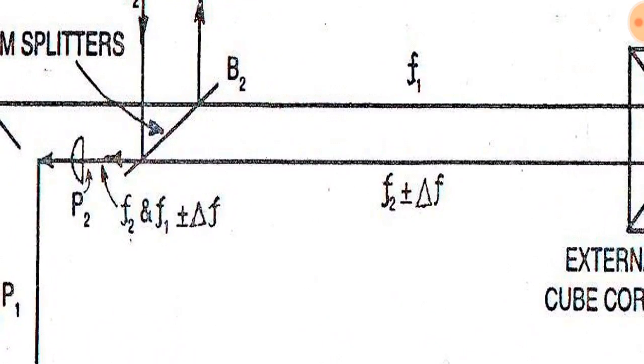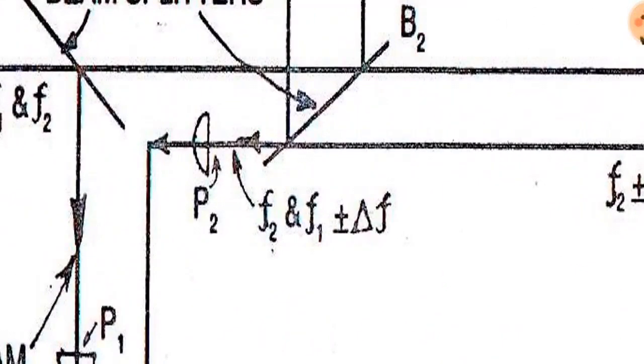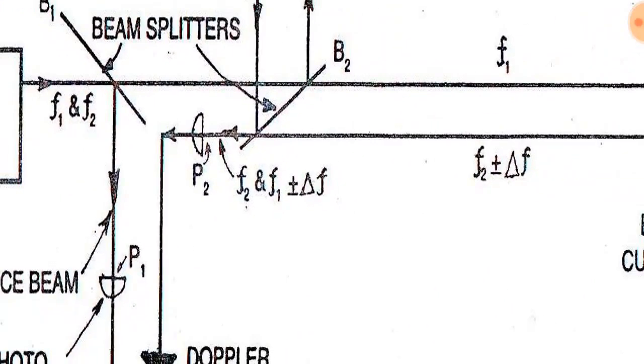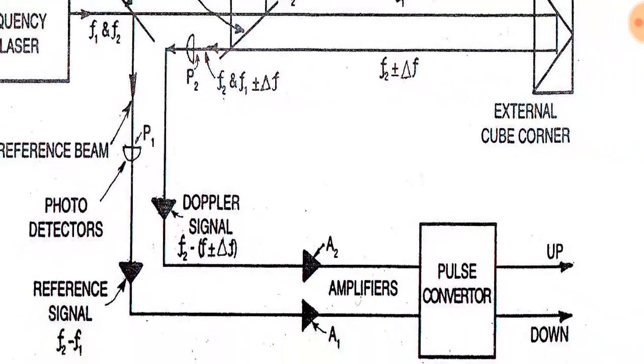The signal f1 plus or minus delta f1 is called the Doppler signal.